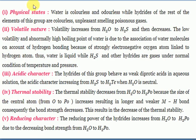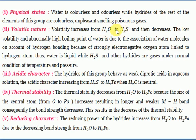Regarding physical state of hydrides: water is a colorless, odorless, tasteless liquid. The rest of the hydrides - H₂S, H₂Se, H₂Te - are colorless gases with unpleasant poisonous smells. Volatile nature: H₂S is more volatile than H₂O because H₂O has hydrogen bonding, which makes water a liquid with the highest boiling point. H₂S has no hydrogen bonding.